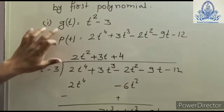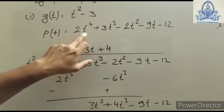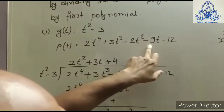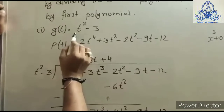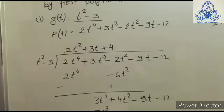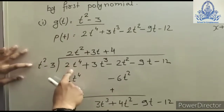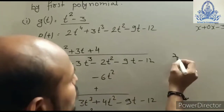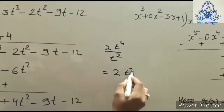We are given g(t) = t² − 3 and t(t) = 2t⁴ + 3t³ − 2t² − 9t − 12. We observe the question carefully to check for missing terms. We can also solve this kind of question without adding the missing term, but pay attention to how it is done. The first term of the dividend 2t⁴ is divided by the first term of the divisor t², giving 2t², the first term of the quotient.